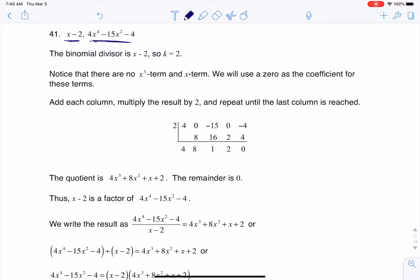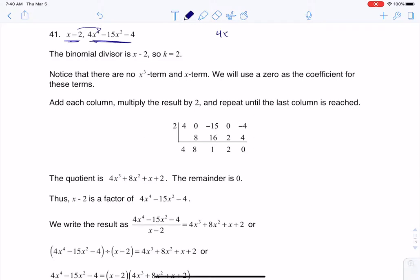We were told to use synthetic division to figure that out. So basically, does x minus 2 divide evenly into 4x to the 4th minus 15x squared minus 4? I'm trying to figure out this quotient. Does it have a remainder of 0 or a remainder of something else? Because if the remainder is 0, then we'll say yep,